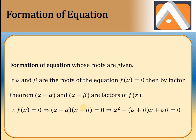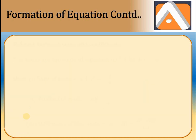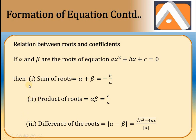If roots are given, in standard you also studied the formation of the equation. If α and β are the roots, then the equation is (x − α)(x − β) = 0, or x² − (sum of roots)·x + (product of roots) = 0. So when two roots are given for a quadratic equation, the sum of the roots is α + β = −b/a, and the product of the roots is αβ = c/a.